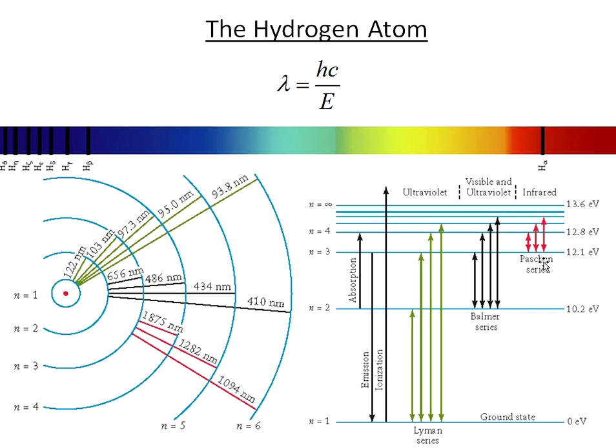And then all the transitions that involve the second excited state, which we call n equals 3, and higher states, we call that the Paschen series, and those are all infrared. These are usually the ones that we care the most about, just because these are the ones that we can see with our eyes, and these are the ones that show up in visible light photographs, the Balmer series of hydrogen.